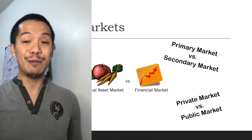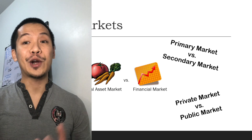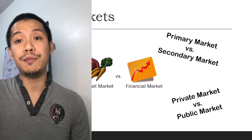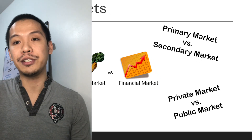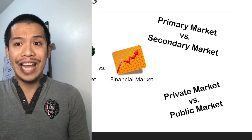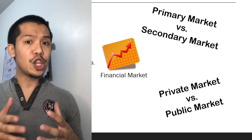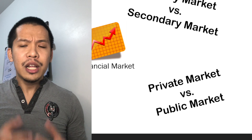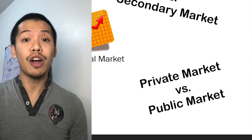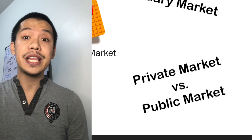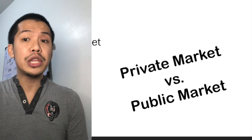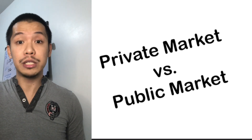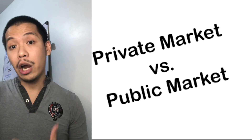Private markets are where contracts are negotiated between two parties, for example a borrower and a lender agreeing on the terms of the loan, including interest rates and collateral. Their rights and obligations depend on what they agreed upon. Meanwhile, in public markets, standardized securities like common stocks are being traded. The conditions of owning a stock — like voting rights and limited liability — are pretty much the same for each common stock across different companies. The terms are standardized.